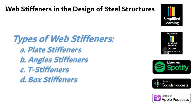T-stiffeners are shaped like the letter T and are welded to the web, providing effective shear resistance for heavy loads and high shear forces. They are particularly useful in applications where the web depth is limited, as they occupy less space than other types of stiffeners. Box stiffeners consist of a combination of plate and angle, forming a box-like structure around the web. They are used in cases of extremely high shear forces and provide substantial stiffness and strength to the beam.